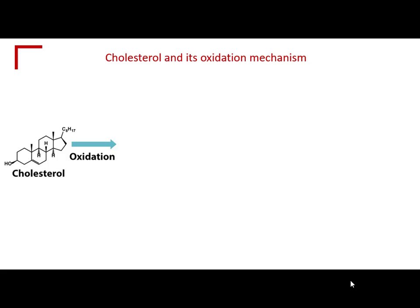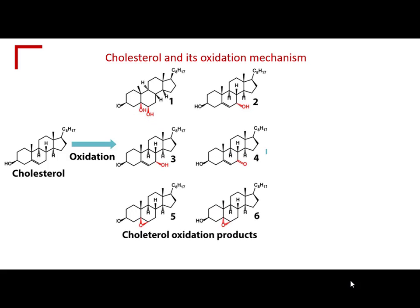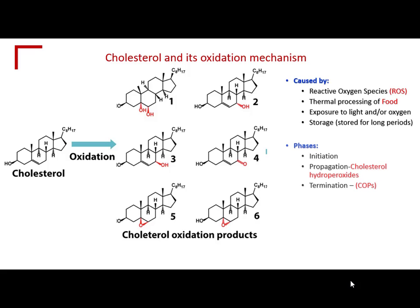Cholesterol is a molecule that has a double bond and long fatty acid chains. When cholesterol gets oxidized, it generates up to 100 compounds that are pretty similar to the parent compound but have different functional groups — forming the cholesterol oxidation products, or COPs. These compounds exhibit different properties than the parent cholesterol in our body. They can be generated in our body by reactive oxygen species (ROS), in food by thermal and non-thermal processing, and also by long-term storage, shelf life, packaging, and handling of food. As in any lipid oxidation mechanism, there are three phases: initiation, propagation, and termination, with the final production of these COPs.